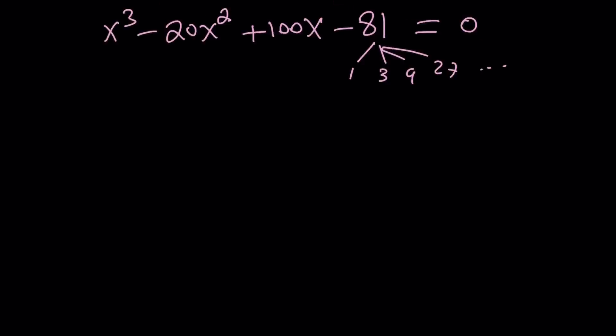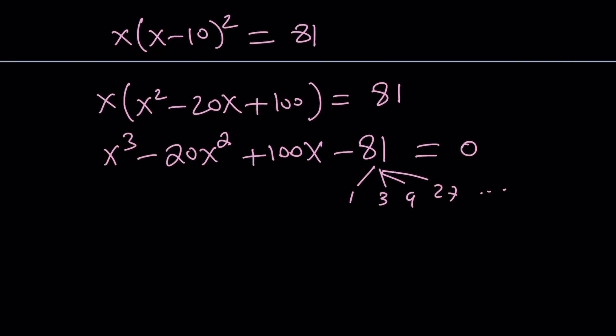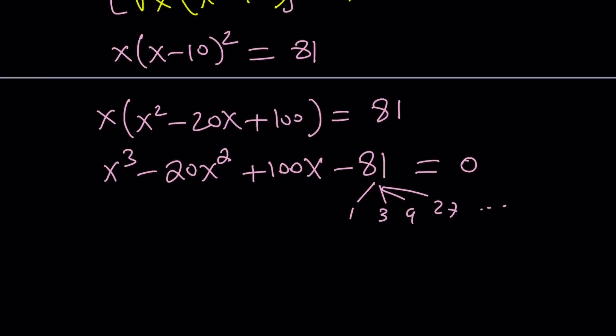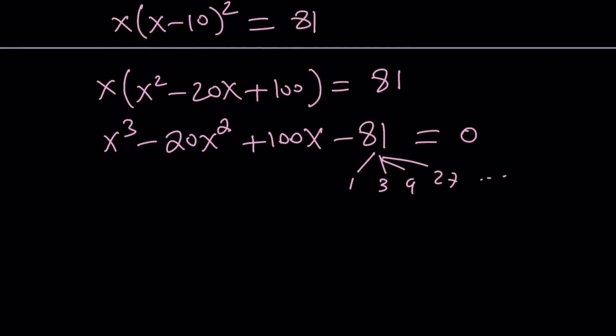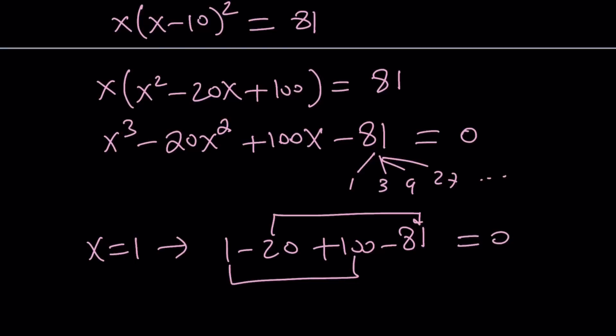A quick look will tell you that 1 is a solution. If you replace x with 1, you get 1 minus 20 plus 100 minus 81. This is 101, this is 101, and the answer is 0. In other words, the sum of the coefficients of this cubic is 0, which means x equals 1 is a solution. Remember, if you're solving a polynomial equation, that's the first thing or one of the first things you should check. Always check that first.